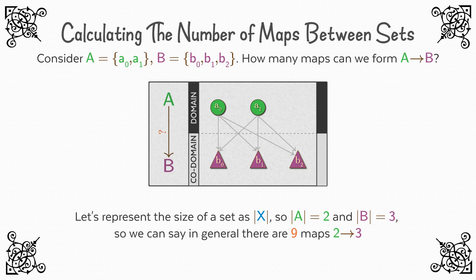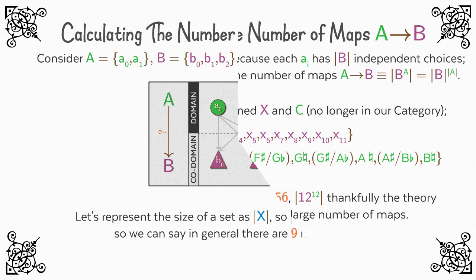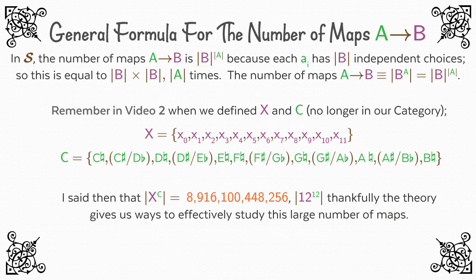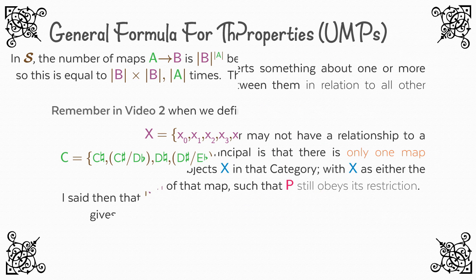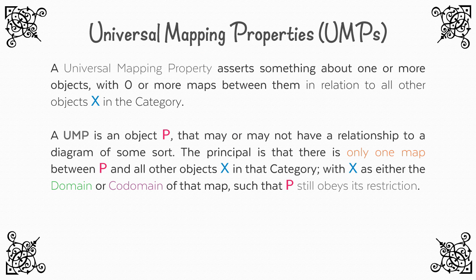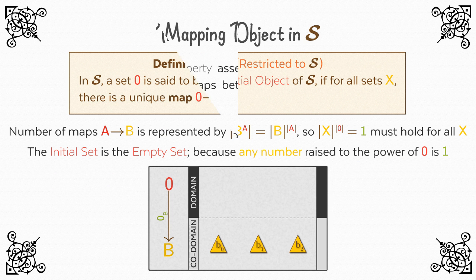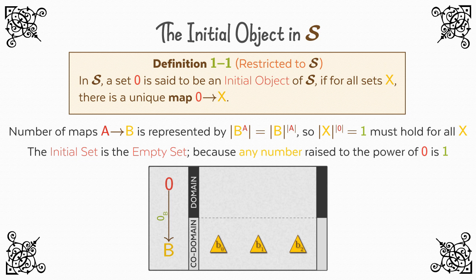Last time, we learned how to calculate the number of maps between sets, and we agreed to use the symbol the size of b to the power of a to represent the number of maps from a to b. We also got our first introduction to universal mapping properties by exploring the terminal object and initial object in S.